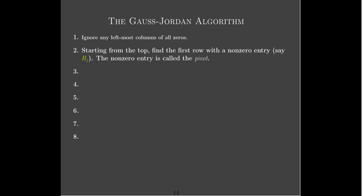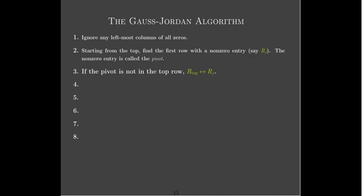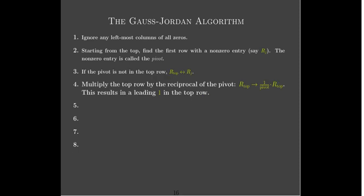We start from the top and find the row with the first non-zero entry. If there are any rows of all zeros, we ignore those and find the first row that has a non-zero entry — that non-zero entry is called the pivot. If the pivot's not in the top row, we perform a swap to bring that row to the top. Then to get a leading one, we multiply the top row by the reciprocal of the pivot, resulting in a leading one at the top.